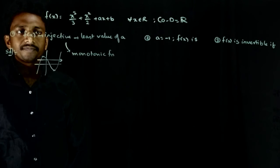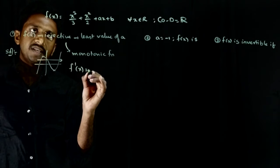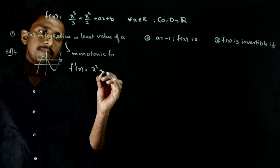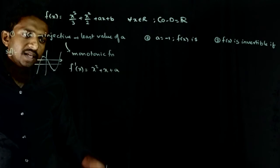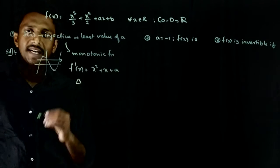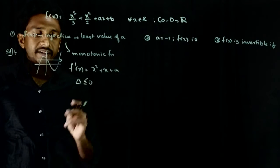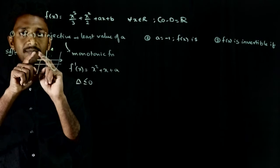A cubic function, if it has to be one-one, it has to be either monotonically increasing or monotonically decreasing. That is, it should not have maximum or minima. This means we need f dash of x. f dash of x is equal to x squared plus x plus a. We need differentiation. The delta of f dash of x should be less than or equal to zero. If it's greater than zero, you will have two distinct solutions. You can have a maximum and a minimum.